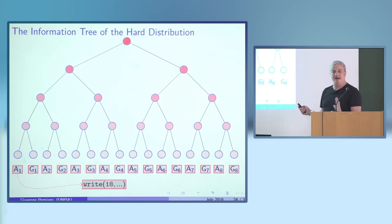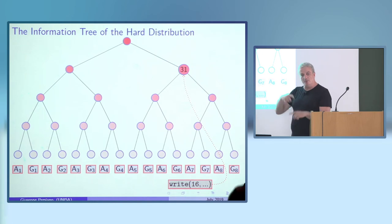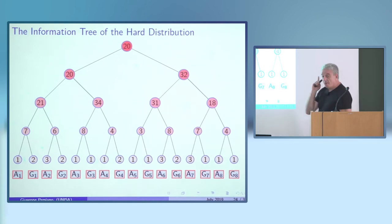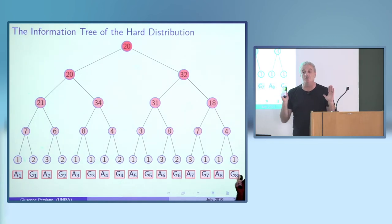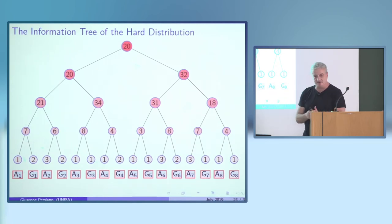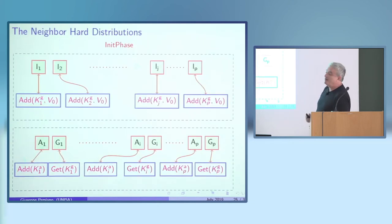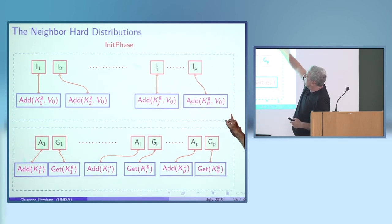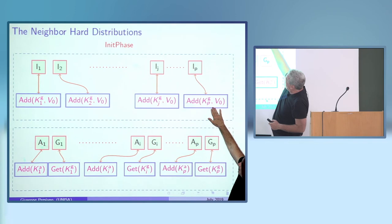This is the information tree of the hard distribution. Each probe is assigned to the lowest common ancestor of the node where it was performed and the node where that probe was last overwritten. An important property is that the information tree can be constructed in polynomial time, meaning an adversary at the server can construct it and use it to distinguish — so it must be the same for all distributions. Each probe is assigned to at most one node.